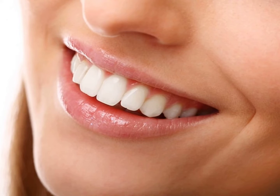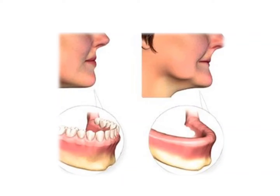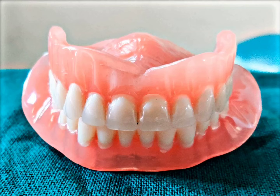Our teeth are not only responsible for mastication, i.e. chewing of food, but they also help us in pronouncing certain words and shaping our face. Loss of teeth can lead to functional impairments and also social disabilities in older individuals. Proper rehabilitation of the lost dentition should be done keeping in mind that the denture must function in harmony with the remaining natural tissues, and for this, a thorough knowledge of anatomy is a must.